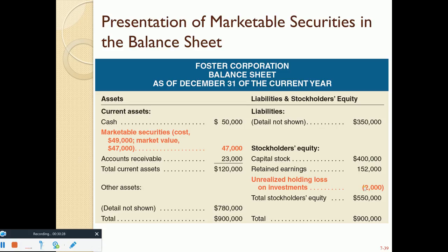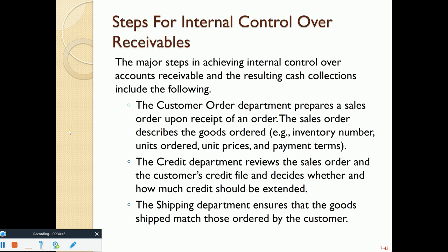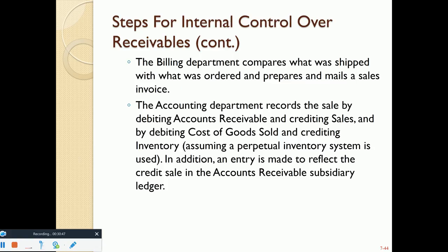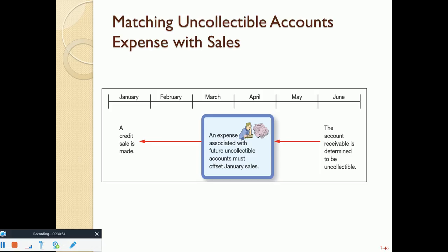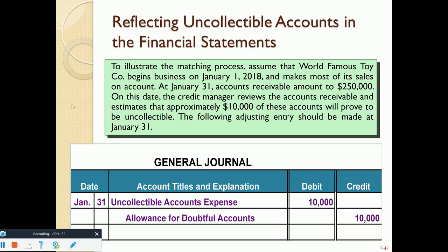If this were an unrealized holding gain, it would be a positive credit balance in equity. Now we move to accounts receivable—the third part of the presentation. When we make a credit sale, the receivable is collected in the future. If we conclude the receivable is uncollectable, we record an Uncollectable Accounts Expense, also called Bad Debt Expense.